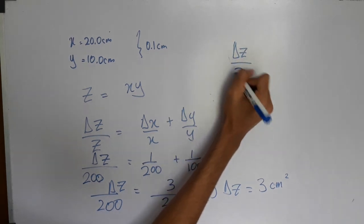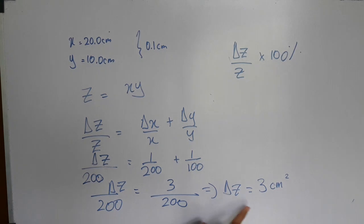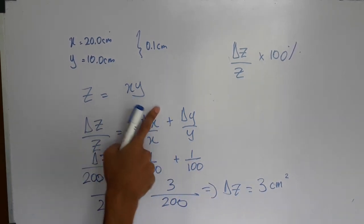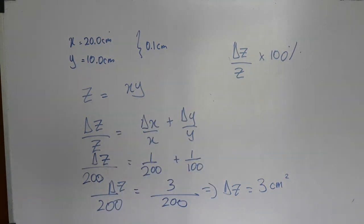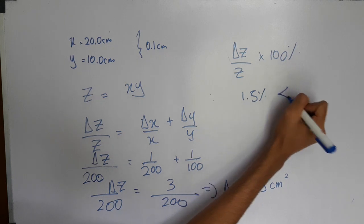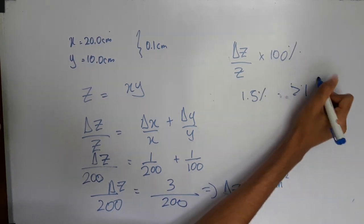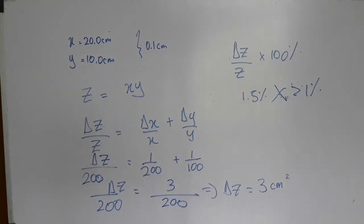Delta z over z is 300. Delta z is 3. Z is x into y, that is 200. So this is 1.5%. Delta z is cm². This is cm². The depth of z is cm² — the pin is the same.